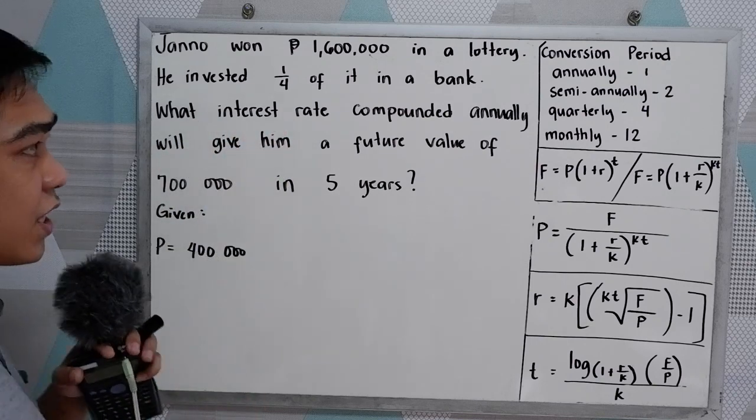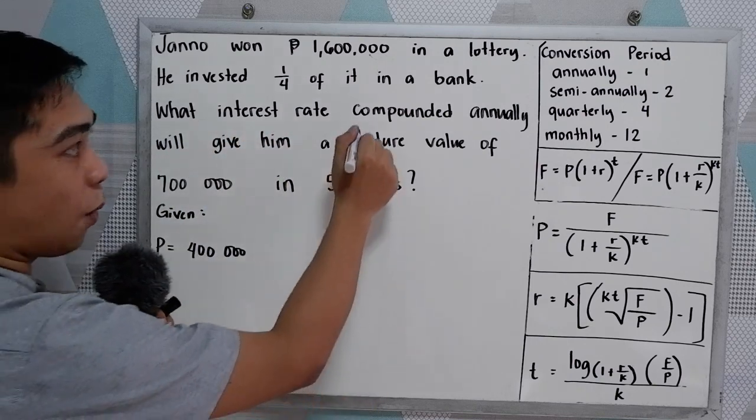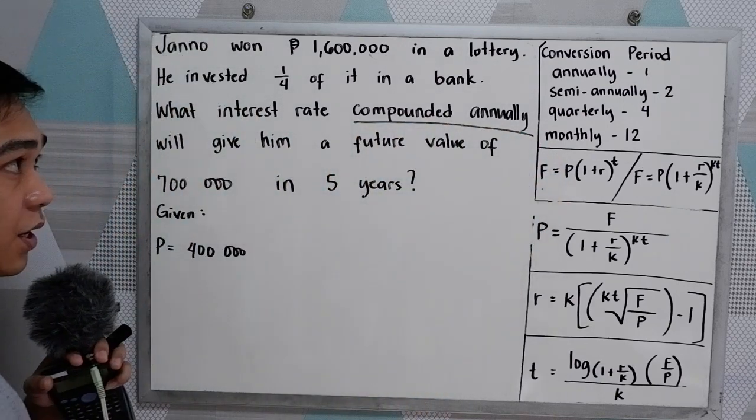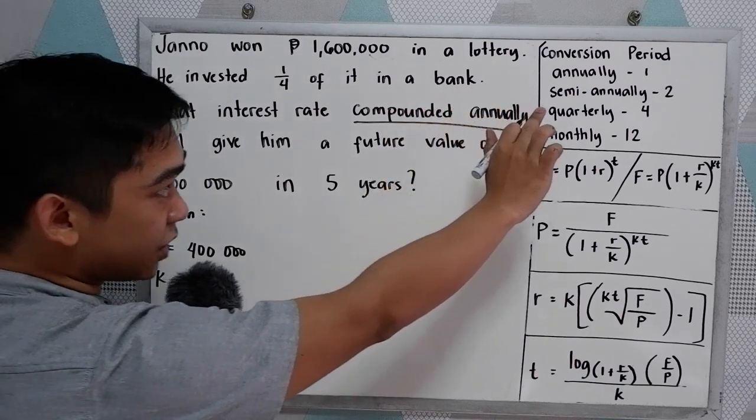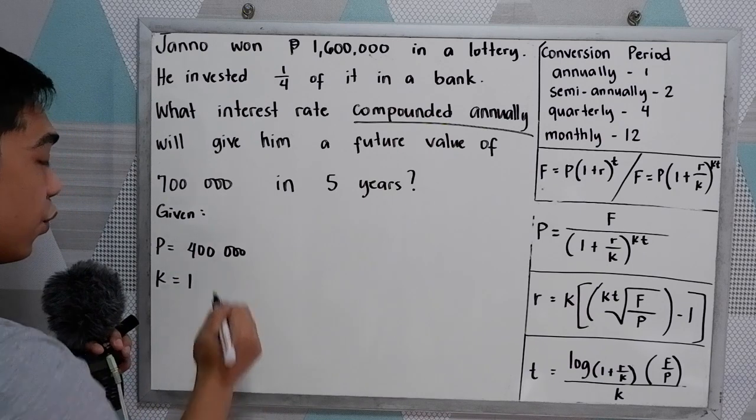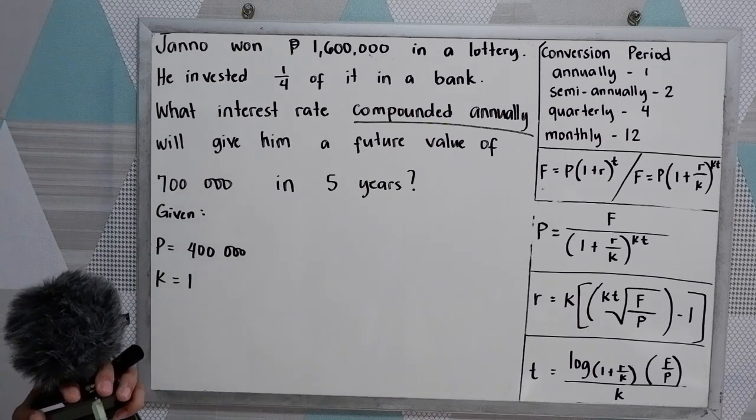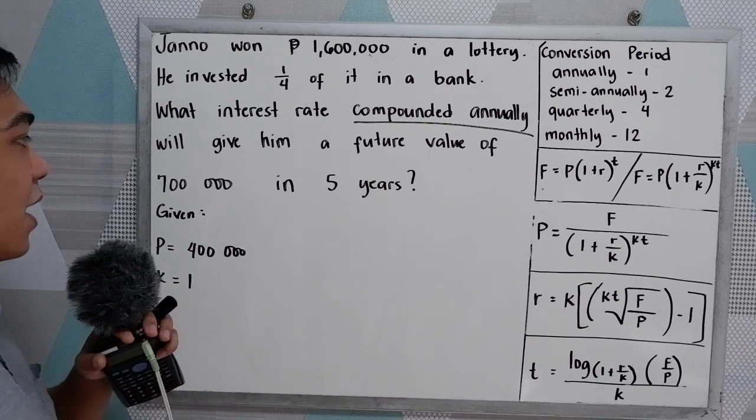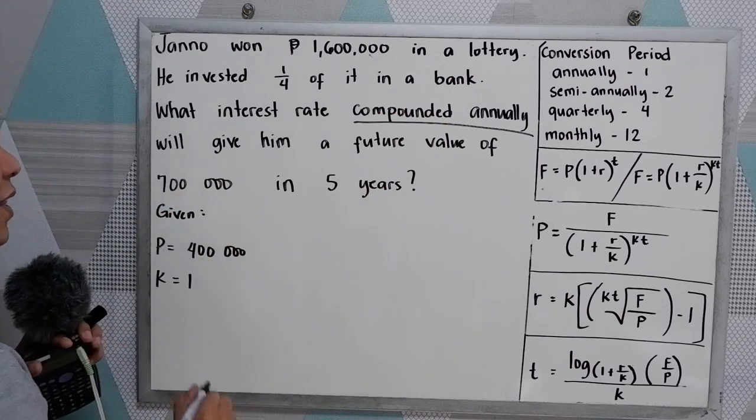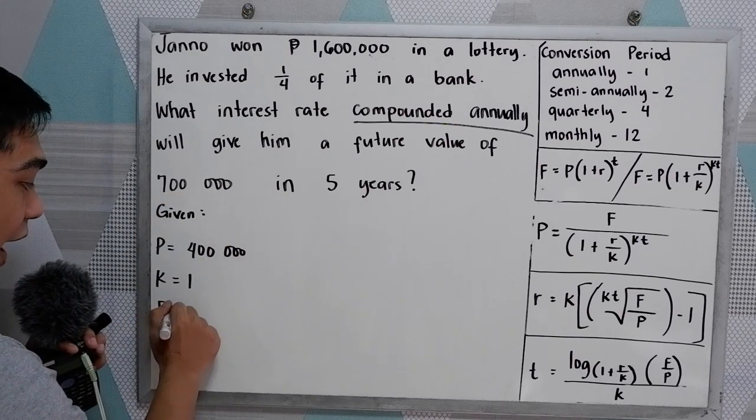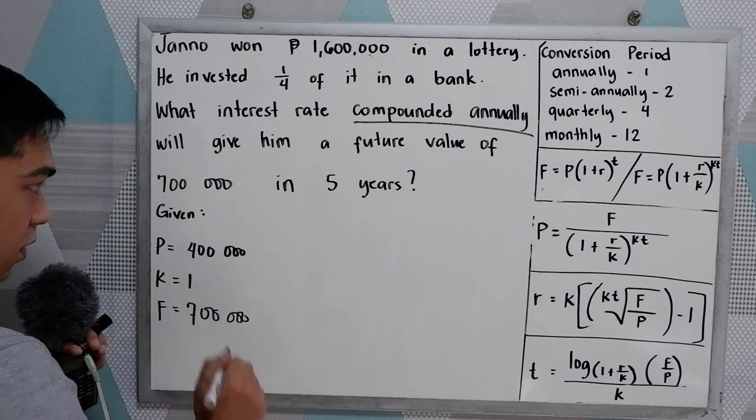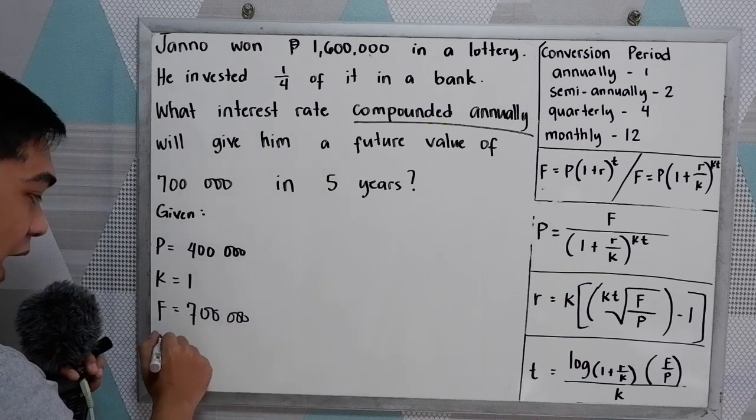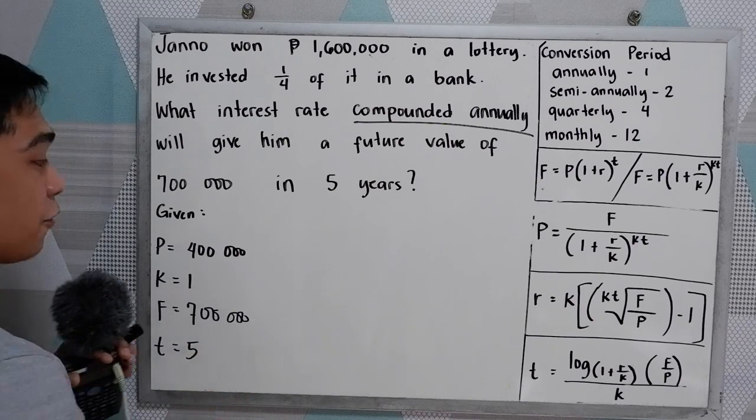What interest rate, compounded annually, that would be our K in our conversion period. Annually is equal to 1. We'll give him a future value of 700,000. So that would be our F, 700,000 in five years. So we have the time, five years.